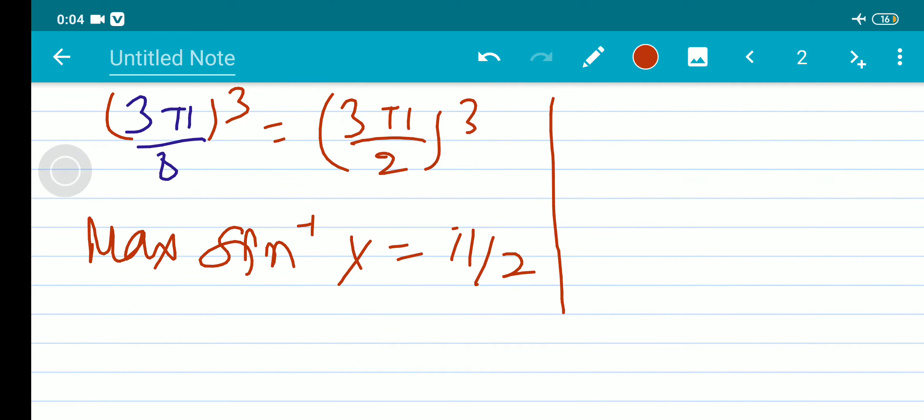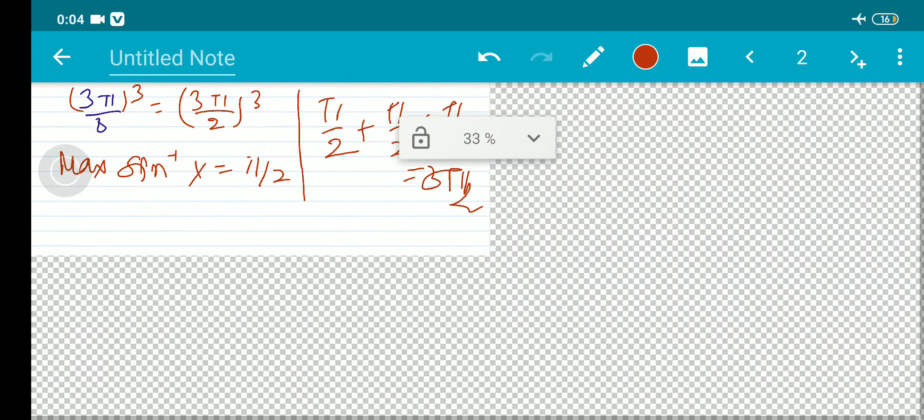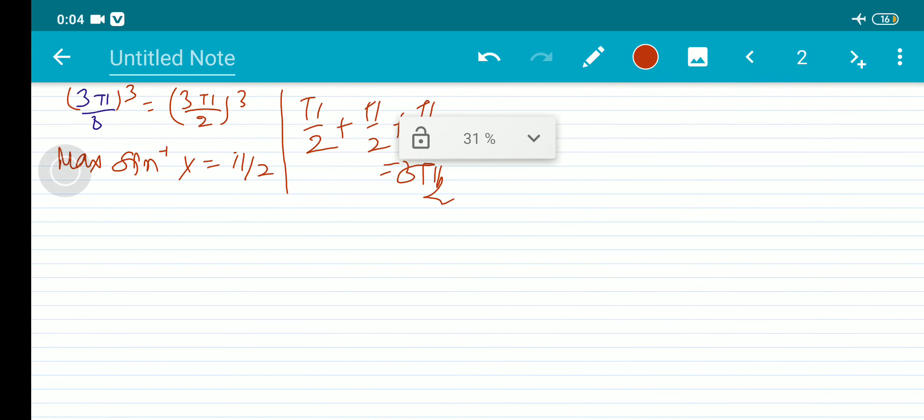Okay, so in this case, as there is 3π/2, which is π/2 plus π/2 plus π/2, means π/2 plus π/2 plus π/2 equals 3π/2, isn't it?